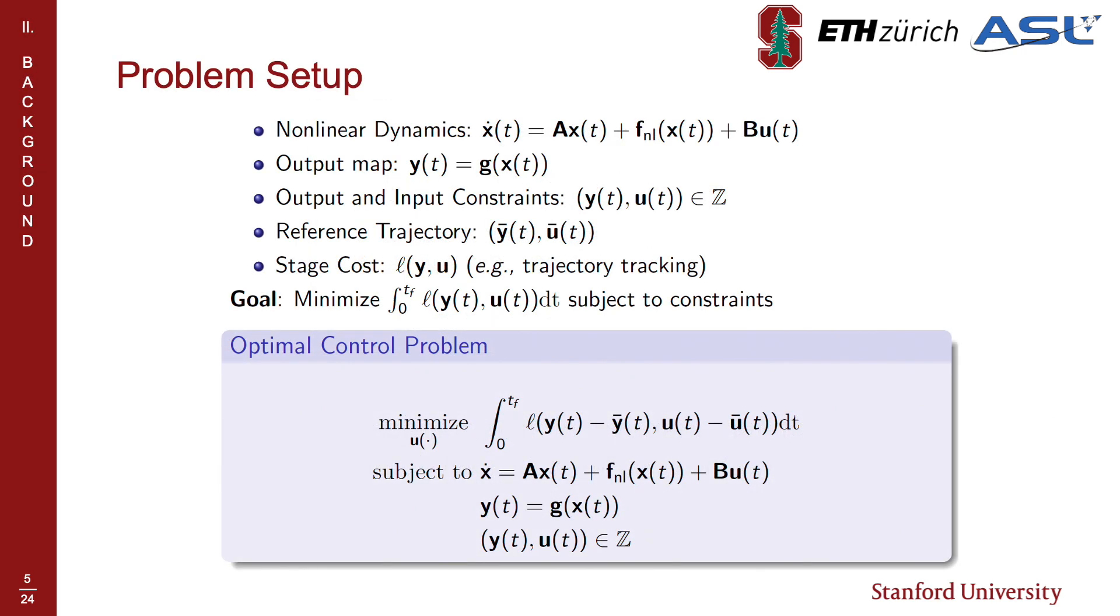We formulate an optimal control problem in which we attempt to control a system to follow a dynamic trajectory subject to output and input constraints. We stress that solving this optimal control problem is intractable due to the extreme high dimensionality of the dynamics, which can range from tens of thousands to millions of states.